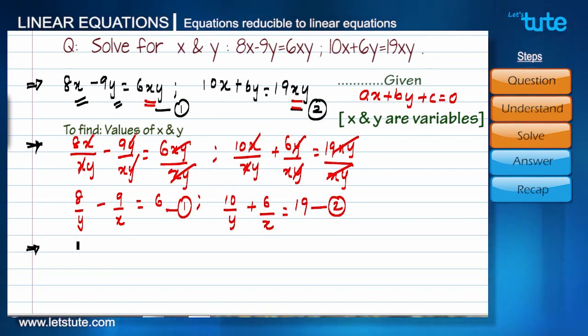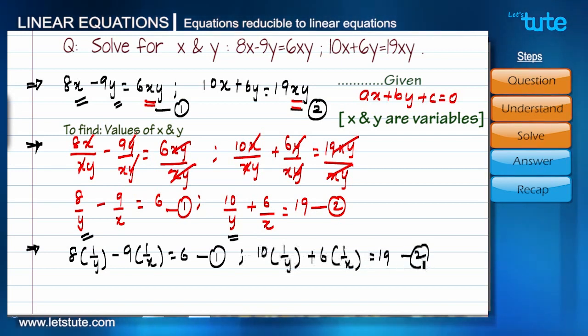This was equation number 1 and this was equation number 2. As we learnt, let's convert them into linear equations. We can write these two equations as 8 into 1 by y minus 9 into 1 by x equals 6. This was equation number 1, and here we can write it as 10 into 1 by y plus 6 into 1 by x equals 19. This was equation number 2.